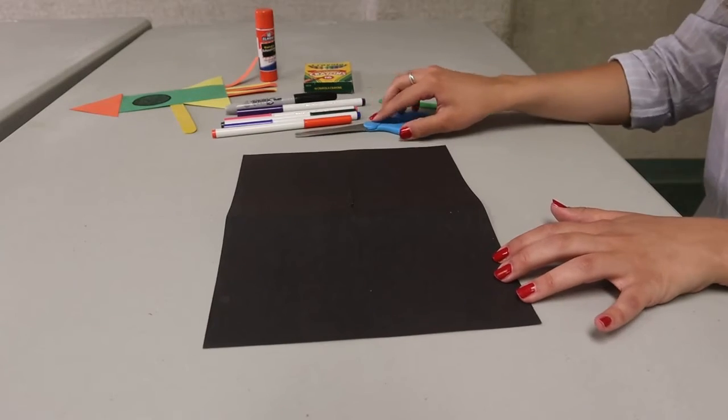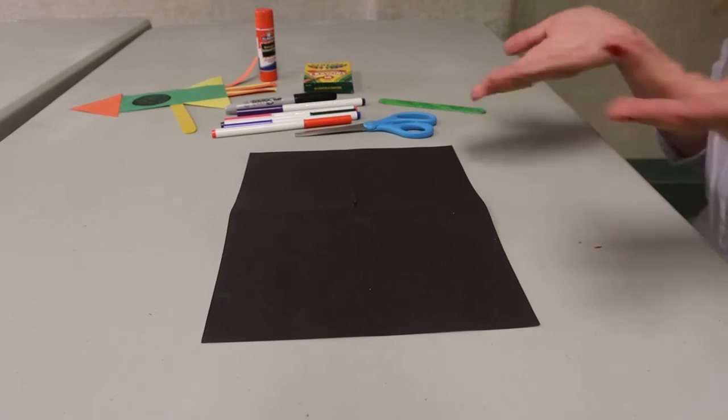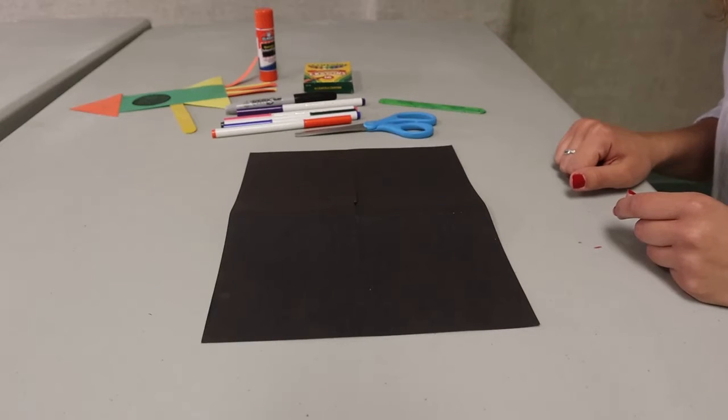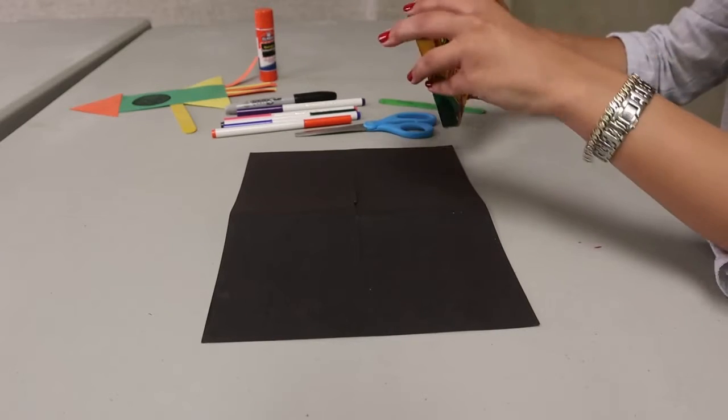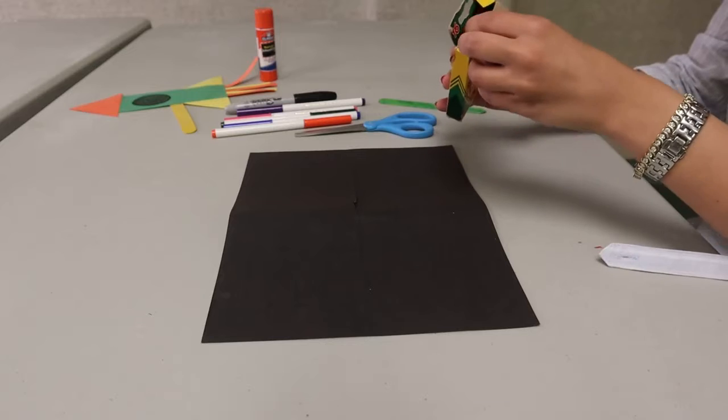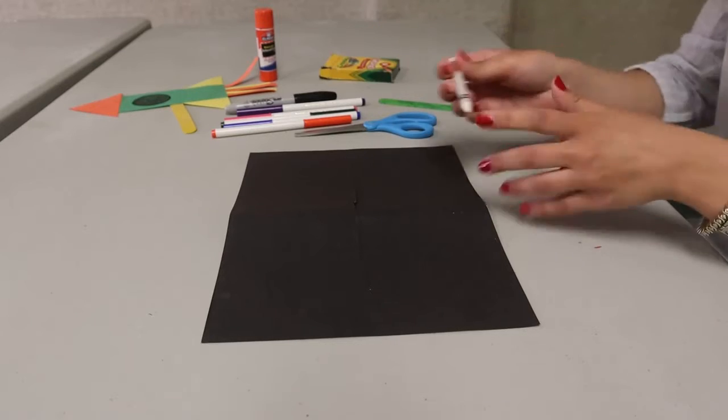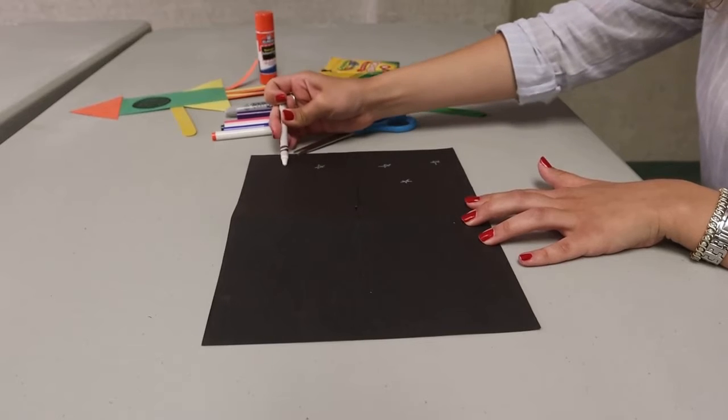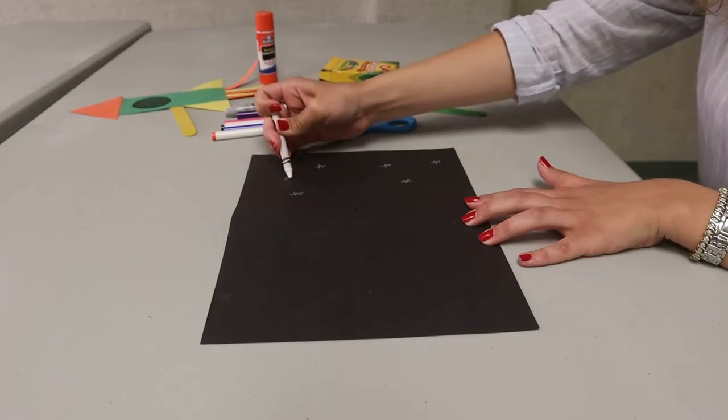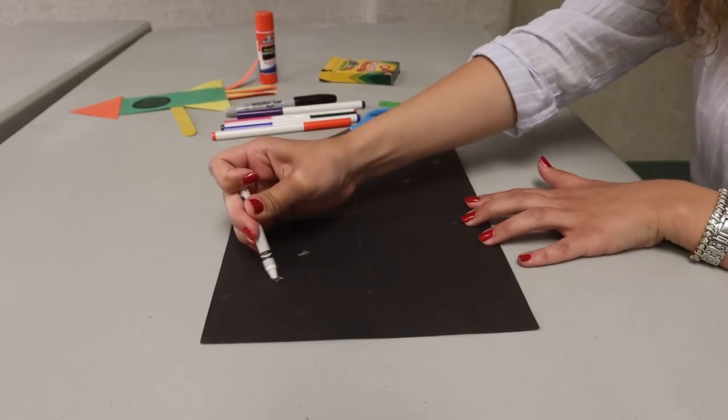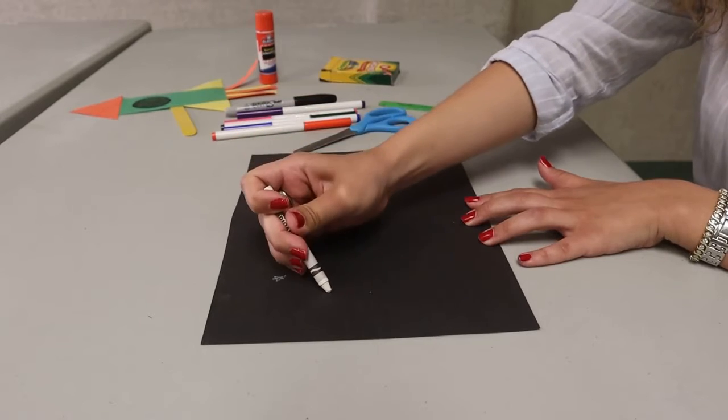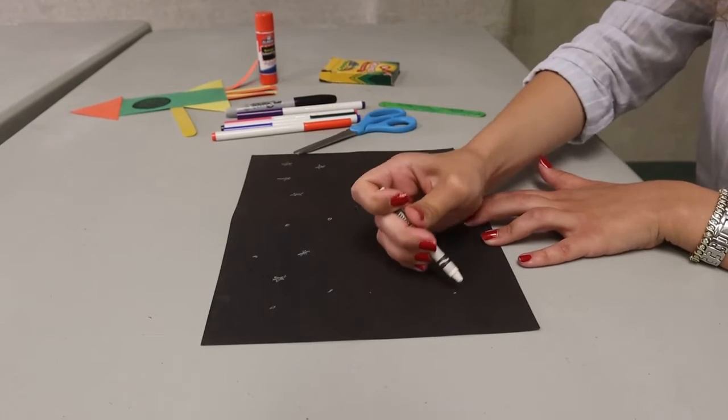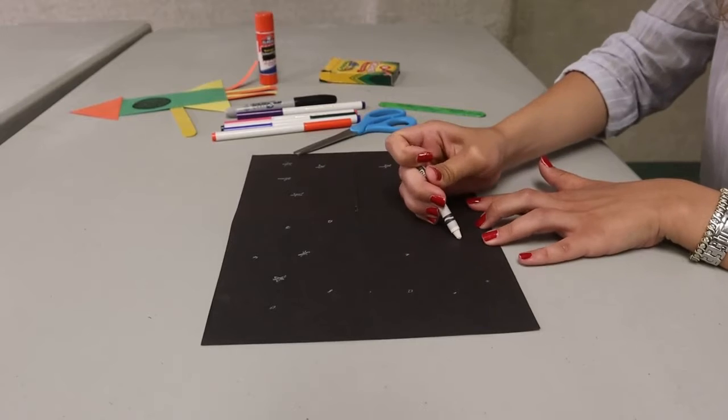And then you're going to open it back up, and you're going to want to put stars as your background. Or you can put whatever you want in the background. It's up to your creativity. I'm going to take a white crayon and I am going to draw stars all over my black background.